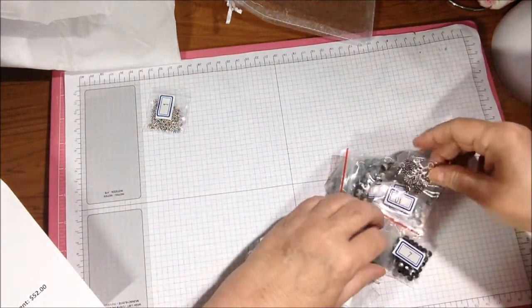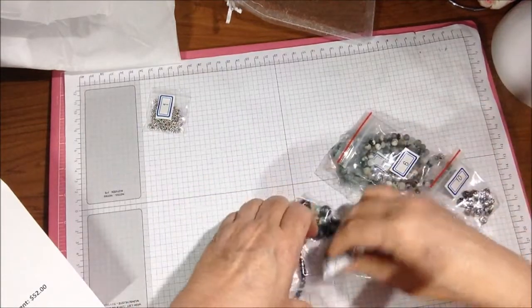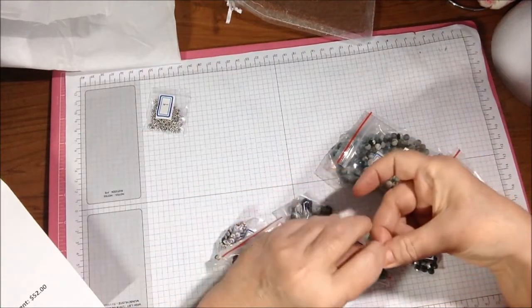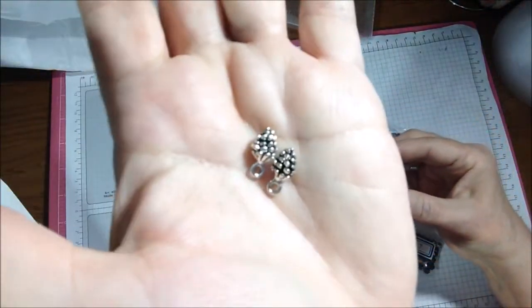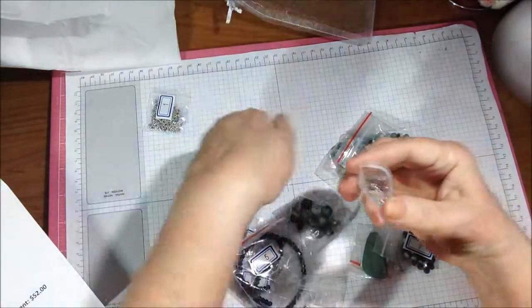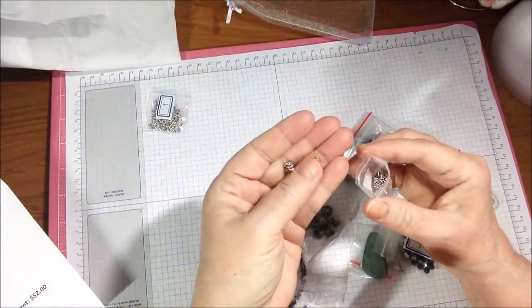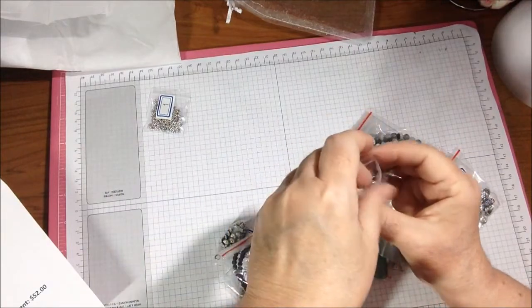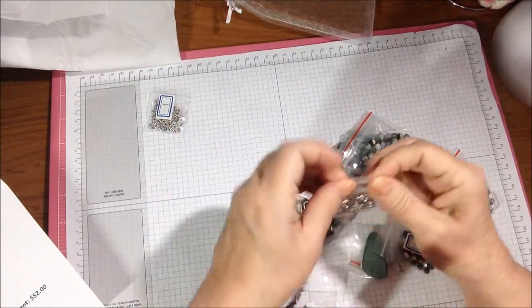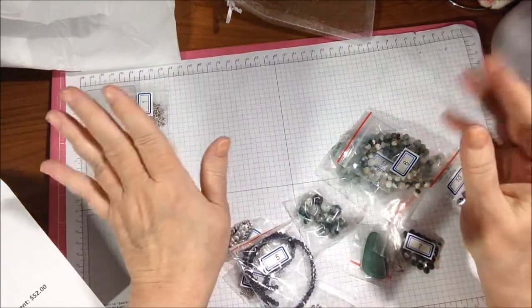Number two is supposed to be some pine cone charms - here they are, these are cute! Really cute pine cone charms and you get 10 of those. They're 30 millimeter and they're obviously double-sided, they go all the way around. Sorry, something fell on my landing.